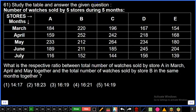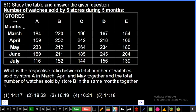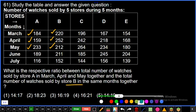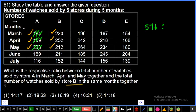Question number 61: Table shows number of watches sold by 5 stores during 5 months - stores A, B, C, D, E and months March, April, May, June, July. Question: What is the respective ratio between total number of watches sold by store A in March, April and May together and total number of watches sold by store B in the same months together? For A: 184 plus 159 is 343. For March, April, May. Next 43 plus 233 is 276.